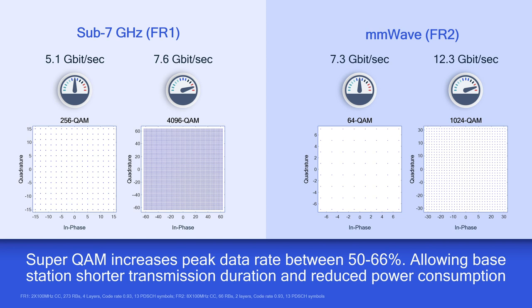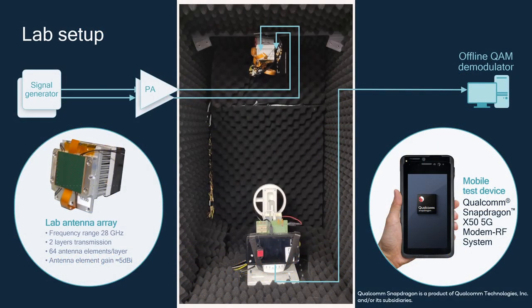In our lab results in the sub-7 GHz spectrum, we are able to move up from 256QAM to 4KQAM, and in the millimeter wave spectrum, from 64QAM to 1KQAM. Our lab setup is similar to the previous demo, except that in this setup, we use our mobile test device with Snapdragon X50 5G modem RF system to receive the signal that we then process offline.